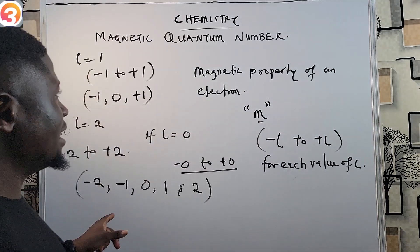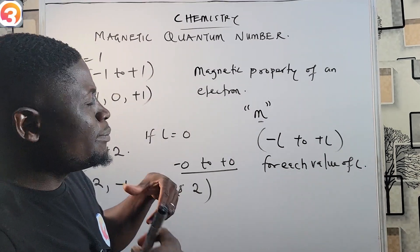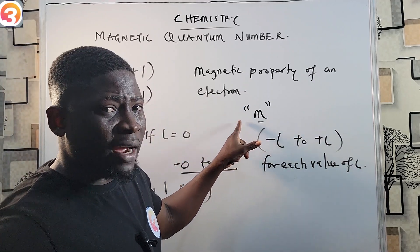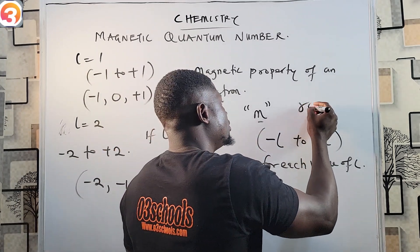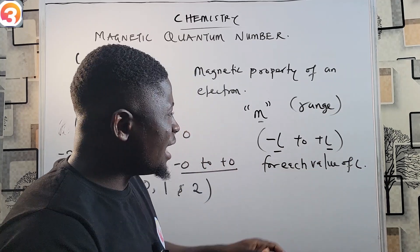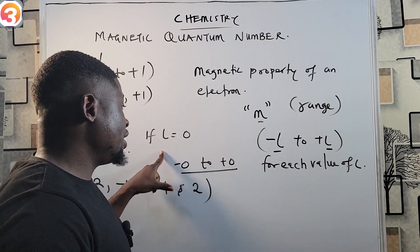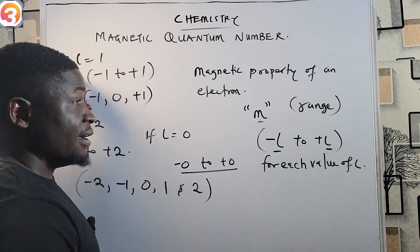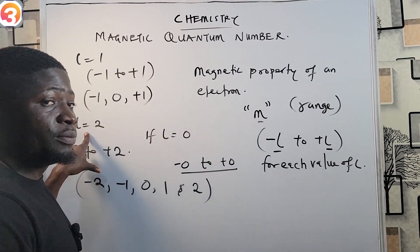To recap: the magnetic quantum number describes the magnetic property of an electron, is abbreviated as m, and has values occurring in the range of minus l to plus l for each value of l. So when l is zero, m ranges from minus zero to plus zero; when l is one, m ranges from minus one to plus one; and when l is two, m ranges from minus two to plus two.